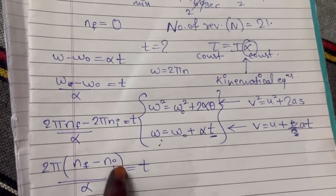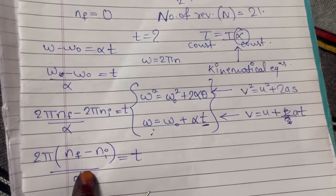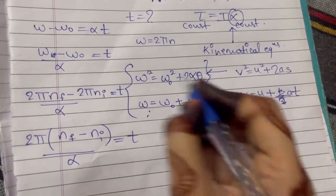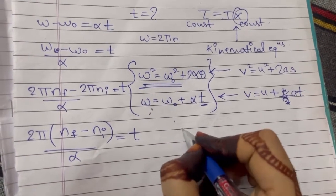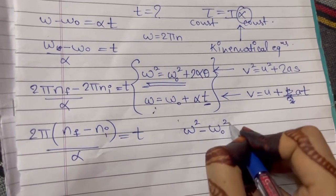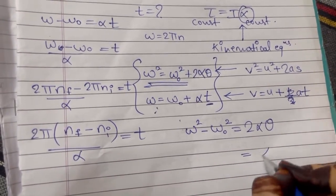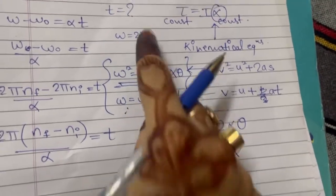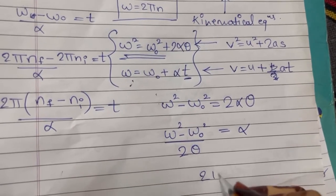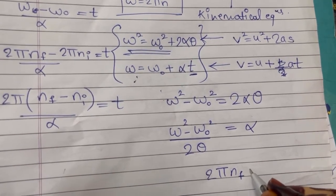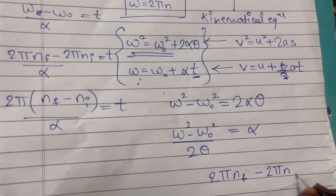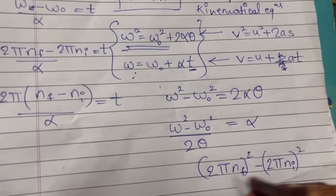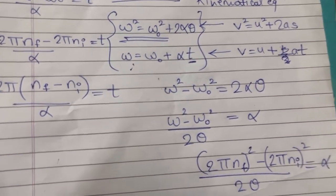We have n_f and n_i but not α, so we use the second kinematical equation: ω² − ω₀² = 2αθ. Rearranging for alpha: α = (ω² − ω₀²) / (2θ). Substituting ω = 2πn: α = ((2πn_f)² − (2πn_i)²) / (2θ). We have all values except θ, so we'll make further substitutions. This is Equation 2.